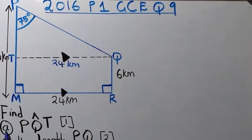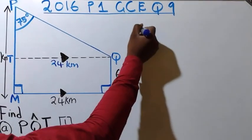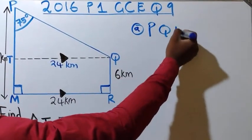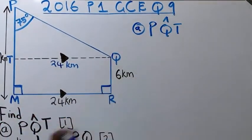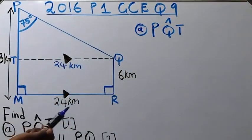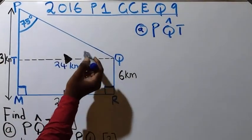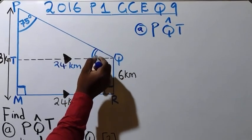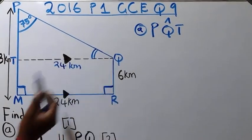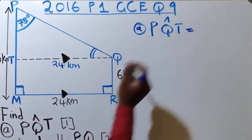Question (a) asks us to find angle PQT. The letter in the middle tells us it's an angle — they want the angle at Q. So we need to find the angle which is at Q in the diagram.